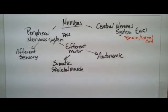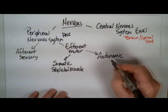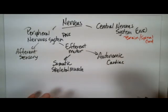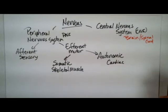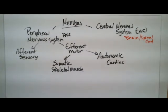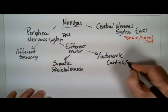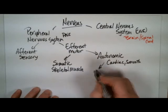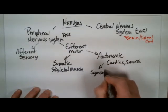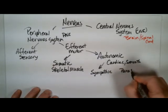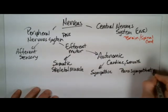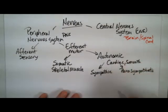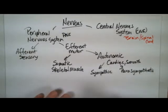The autonomic division, which is not under conscious control, provides motor output to cardiac muscle — your heart — and smooth muscles like the peristalsis in your digestive system, such as the small and large intestines. We can divide the autonomic into two divisions: the sympathetic division and the parasympathetic division.